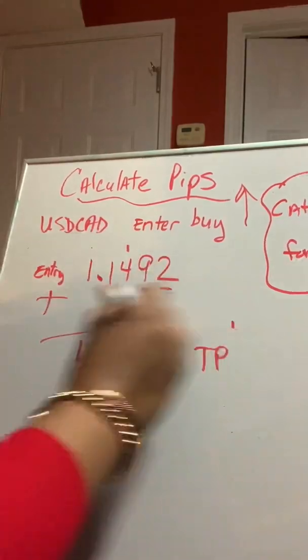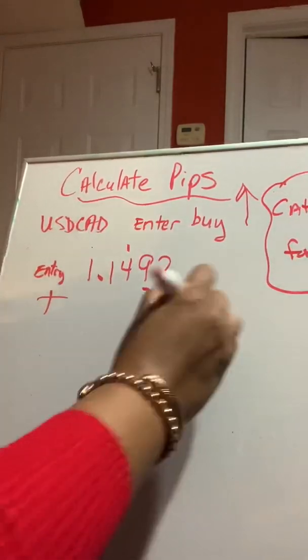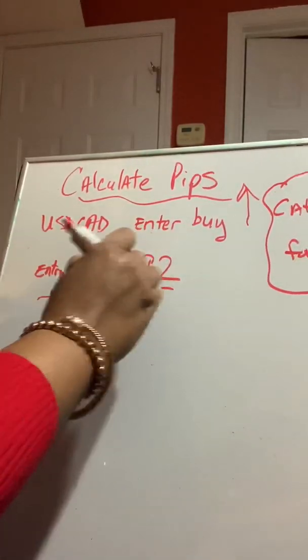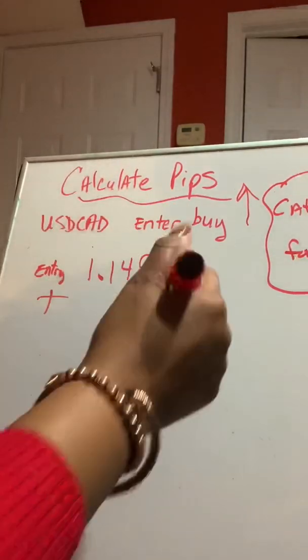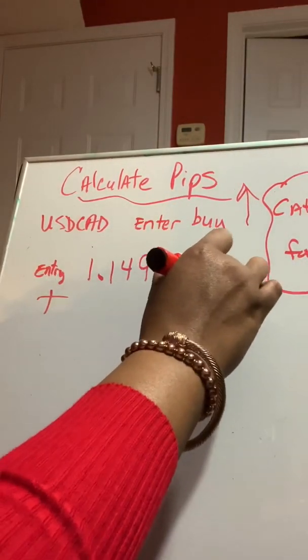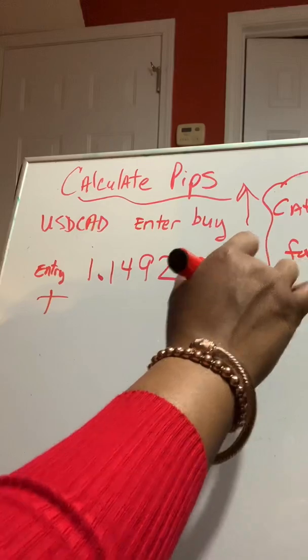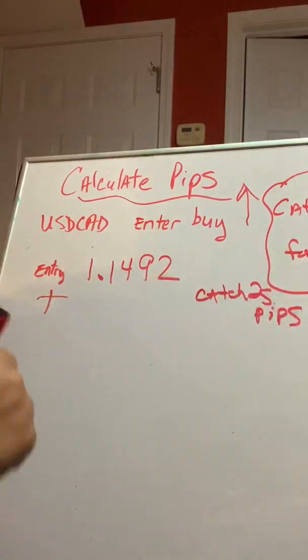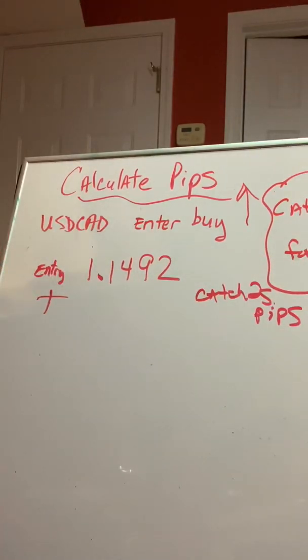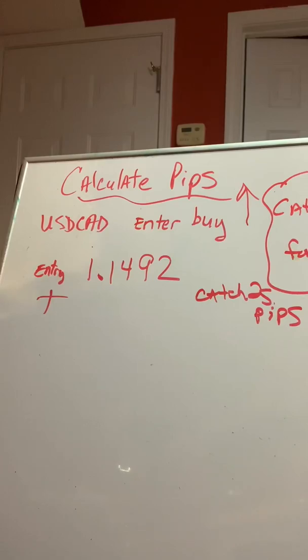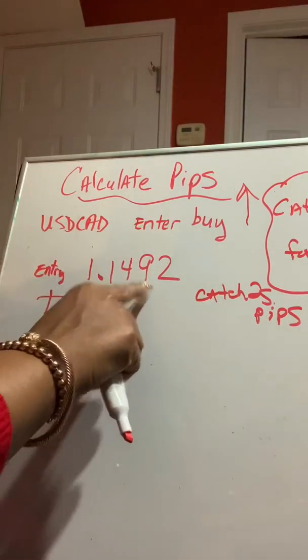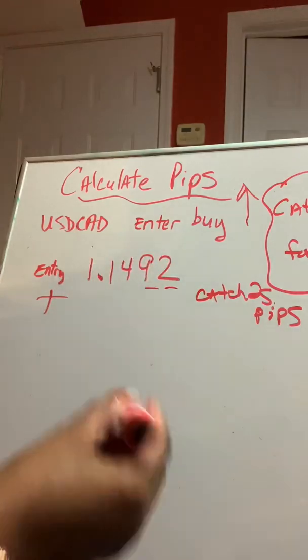Let's say now I want to catch 20 pips or 25 pips. Okay? Catch 25 pips. If I enter at 1.142, I'm going to go to the third or fourth number. One, two, three, four, third or fourth number.